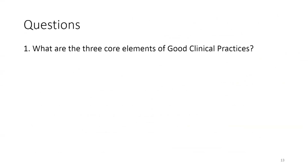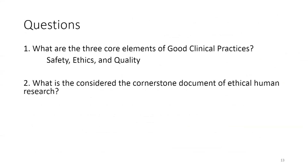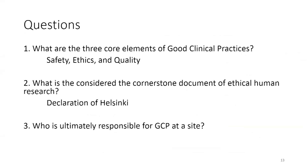Now that we've gone through the presentation, just a few questions to assess your understanding. What are the three core elements of good clinical practice? That is safety, ethics, and quality. What is considered the cornerstone document of ethical human research? That's the Declaration of Helsinki. And lastly, who is ultimately responsible for good clinical practice at a site? That would be your clinical investigator and principal investigator. I hope you were able to learn some of the core elements of good clinical practice, ICH E6R2. Thank you so much for listening.